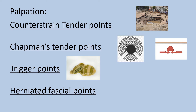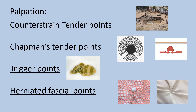A herniated fascial point, called a herniated trigger point by some, occurs when fascial tissue protrudes through and gets pinched by a more superficial or deep fascial plane. These will feel different depending on whether the herniated fascial tissue is protruding from a deep through a more superficial layer, or is instead superficial fascia protruding through a deeper layer.